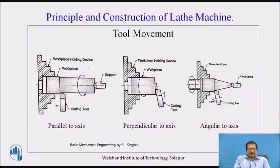Regarding the principle and construction of the lathe machine: the job is held in a workpiece holding device called a chuck, which rotates along its own axis and may be supported from the front side to prevent perpendicular movement. When the cutting tool moves parallel to the axis, it generates a cylindrical surface; the material removed along the radius equals the depth of cut, and the diameter is reduced by double the depth of cut.